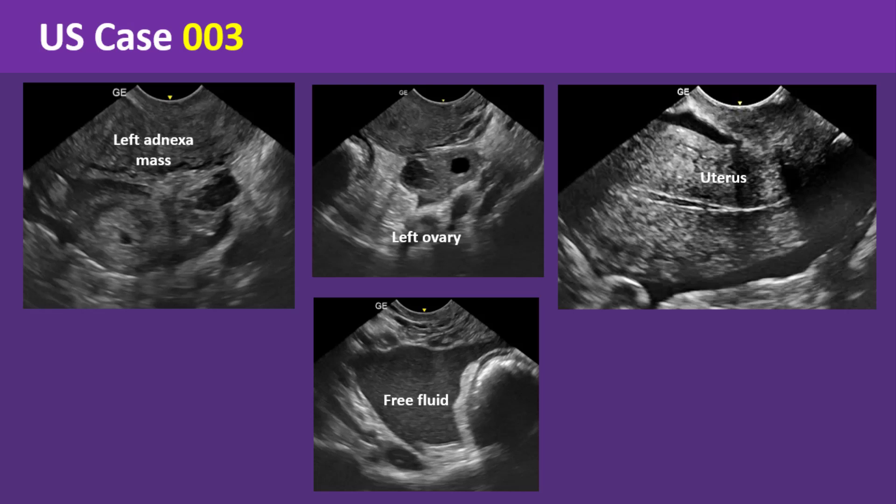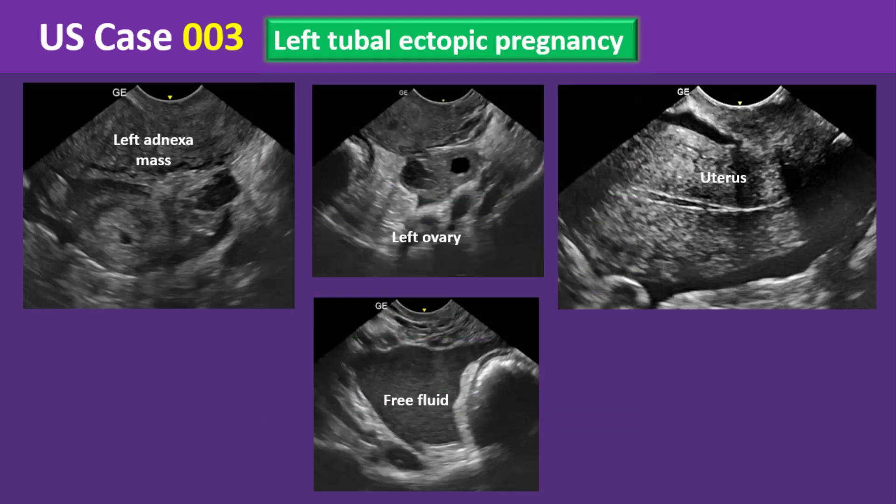There is a considerable amount of free fluid seen in the pelvis that shows homogeneous low-level echoes, highly suggestive of hemoperitoneum. These findings are suggestive of left tubal ectopic pregnancy.